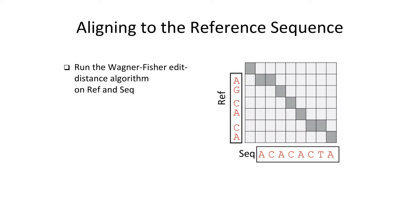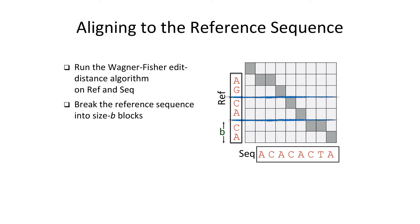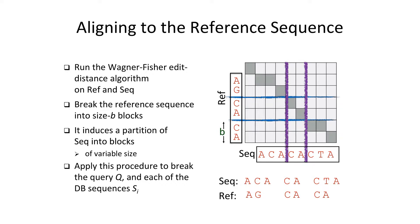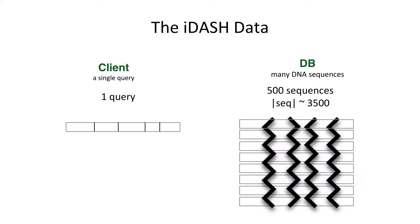We compute edit distance between each sequence and the reference — but in the clear, not as a secure computation, which is much faster. We break the reference genome into fixed-size blocks, then trace through the edit distance computation to identify where insertions and deletions occurred, giving the alignment to the reference. We use that alignment to break the sequence we care about. This preprocessing is done separately at the server for all database sequences and by the client for the query.